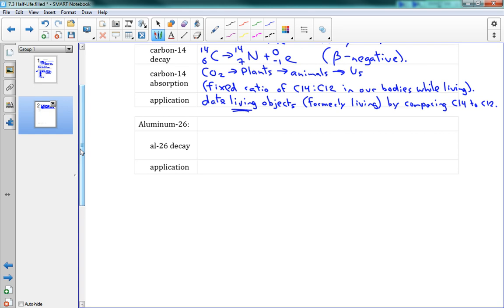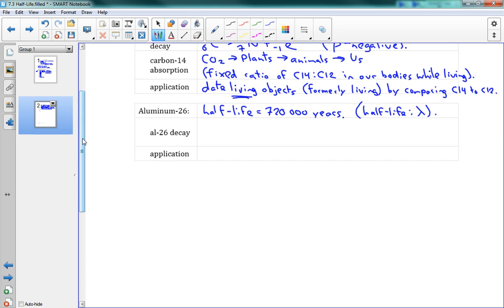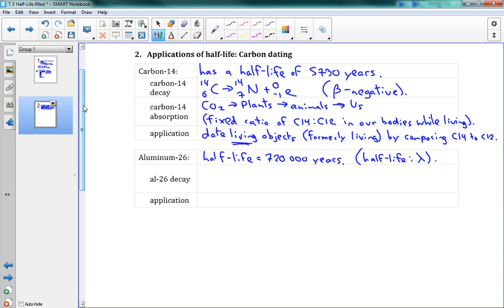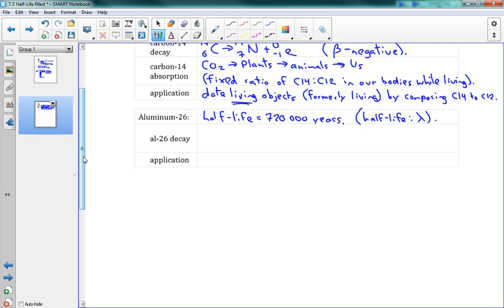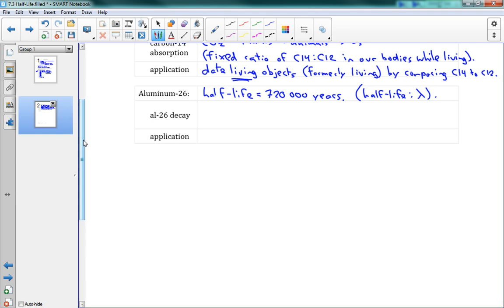Now another similar technique is using what's called aluminum-26. And aluminum-26 has a half-life of 720,000 years. And by the way we've been saying half-life and I've just been writing it out but half-life, the physics symbol for it is lambda like this. And again if you're familiar with a video game called half-life that's the symbol for that video game. Okay so aluminum-26 has a much longer half-life 720,000 years. So carbon-14 isn't very useful for things that are that old because it stops really giving accurate readings. So aluminum-26 is more useful for older things and also things that aren't necessarily living.